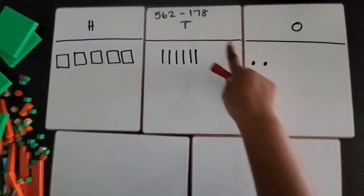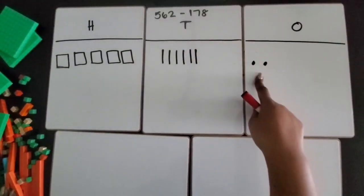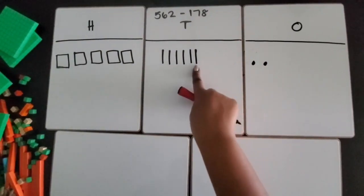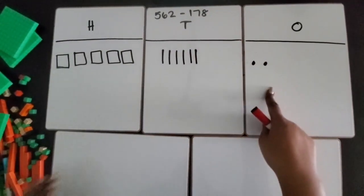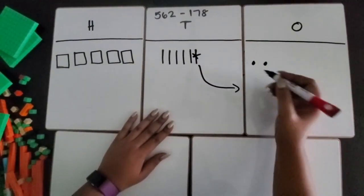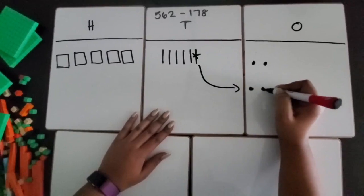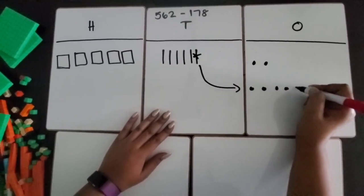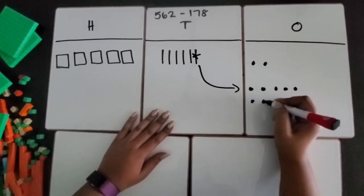I need to subtract 8 ones from 2 ones, so I'm going to take one of the 10s and regroup it to 10 ones. I'm going to take that 10 and then trade it in for 10 ones.